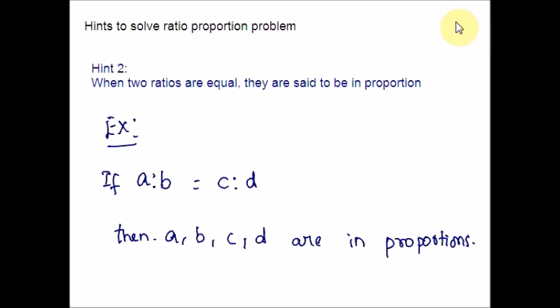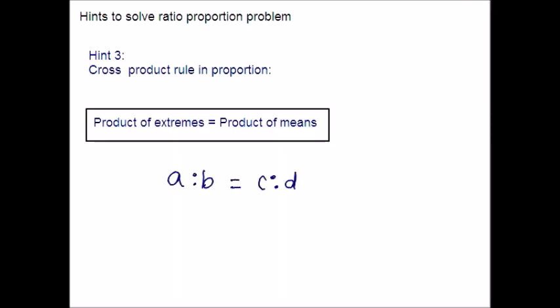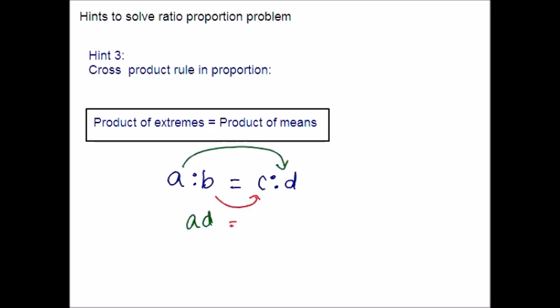Let us move on to the next hint. A very important hint is the cross multiplication rule. The cross product rule in proportion is very important while solving these problems. The product of extremes will be equal to the product of means. Consider this proportion: extremes are A and D, and means are B and C. As per the cross product rule, the product of extremes equals the product of the means. This hint will be very useful while solving word problems.